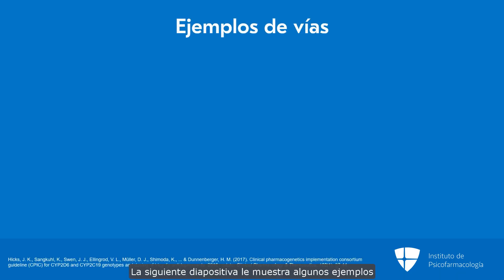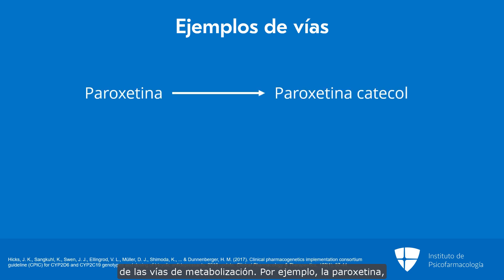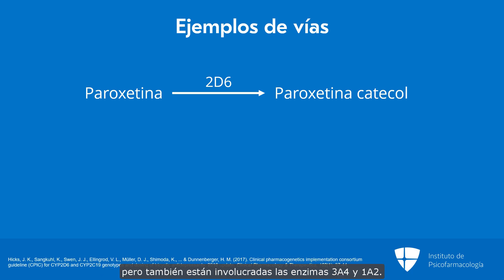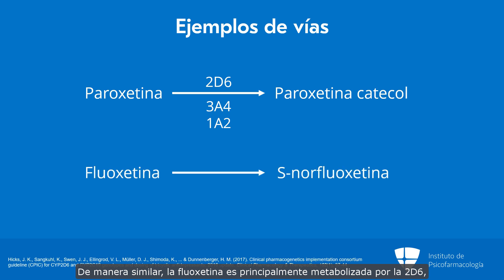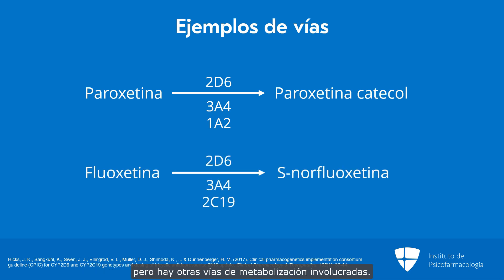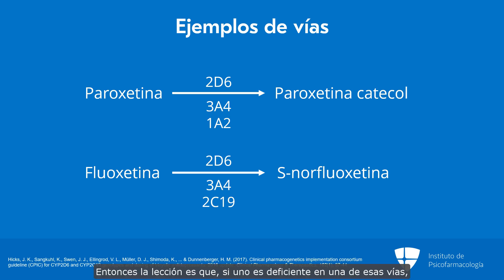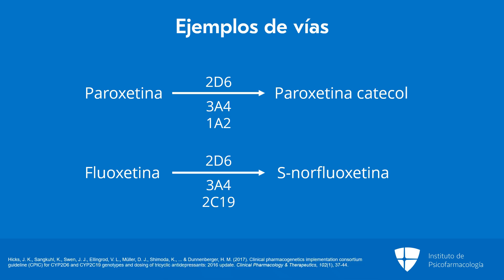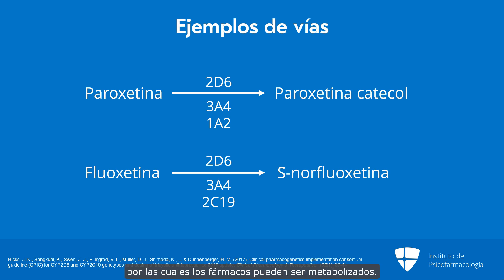The next slide shows some examples of the pathways. For example, paroxetine, which is Paxil, is mostly 2D6 metabolized, but there is also some 3A4 and 1A2 involvement. Similarly, fluoxetine is mainly 2D6 but a few other enzyme metabolism pathways are involved. The lesson there is: if one pathway is deficient, it doesn't mean it's a catastrophic event — there frequently are other minor pathways through which the medicine can be metabolized.